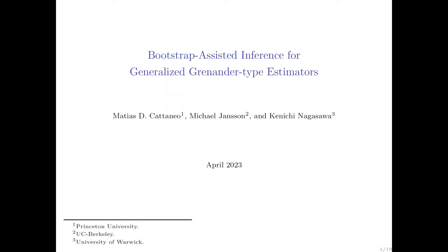In this department I think it will come as no surprise — this is one of the most practical topics that you can find in any advanced textbook on mathematical statistics. The approach we are going to dive into today is more about inference. We are going to think about how to conduct inference for a particular class of problems that we refer to as generalized Grenander-type estimators. I should mention that this is joint work with my long-lasting collaborator Michael Johnson at UC Berkeley, and my former student Kenichi Nagasawa, who is now at University of Warwick.